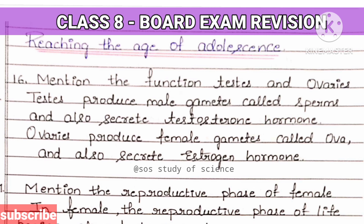The 16th question is: mention the function of testis and ovaries. Testis is a male reproductive organ — it produces the male gametes, which are the male sex cells, and they are called sperms. Testis also helps in producing a hormone called testosterone. Similarly, ovaries produce female gametes, which are also called female germ cells or female sex cells — that is, ova, or eggs.